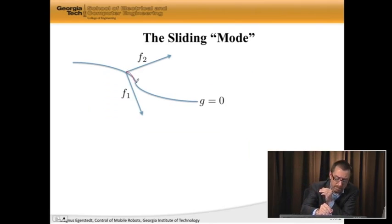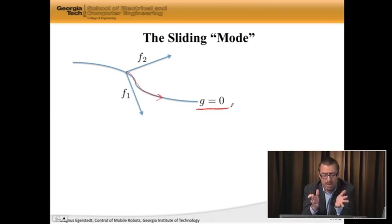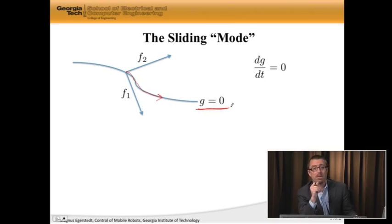So if I'm sliding here, what is characterizing that motion? Well, I know that g of x is equal to 0, which means that if I take the time derivative of g with respect to t, then it should be 0, because g is not going to change when I'm sliding, because I'm staying at g equal to 0.